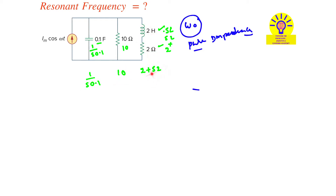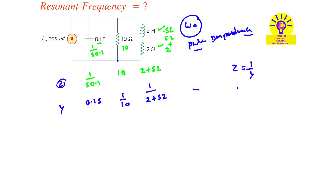Now find the admittance of each branch. For the capacitor branch the admittance is 0.1s, for the resistor branch it is 1/10, and for the series RL branch it is 1/(2 + 2s). Recall that Z = 1/Y or Y = 1/Z.